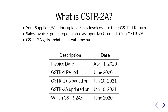In which GSTR2A can we find this invoice? This is a question that we usually get. This invoice will be in the June 2020 GSTR2A, which is the same period as the GSTR1 in which the taxpayer had uploaded the invoice.